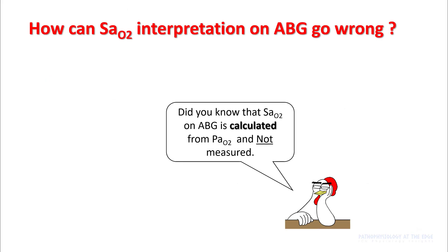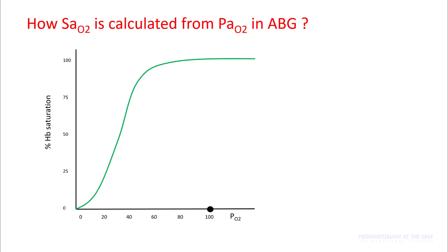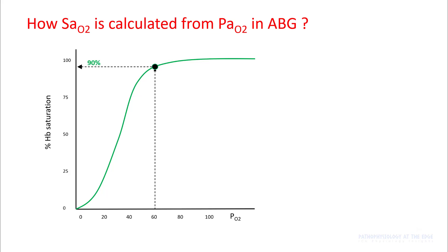Now let's see how good the saturations on arterial blood gas are. One of the most important limitations of SaO2 on ABG is that these are calculated from PO2 and not measured — and this can be a serious problem. The ABG machine measures your PO2, fits it into a standardized oxyhemoglobin curve, and gives you SaO2. So if your PO2 is 60, it will draw a straight line, and where it intersects with the oxyhemoglobin dissociation curve, it will give you the percentage SaO2.